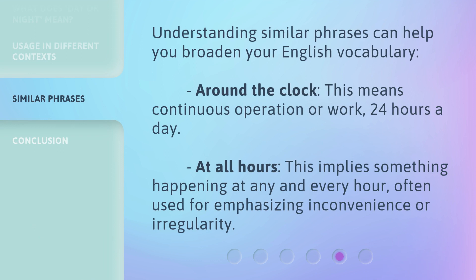Understanding similar phrases can help you broaden your English vocabulary. 'Around the clock' means continuous operation or work, 24 hours a day. 'At all hours' implies something happening at any and every hour, often used for emphasizing inconvenience or irregularity.